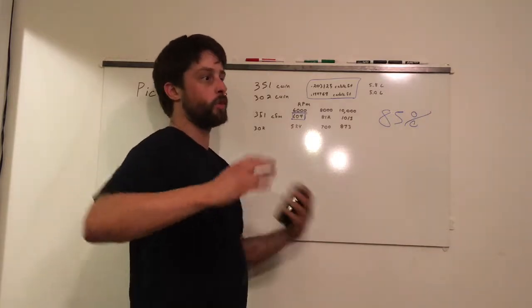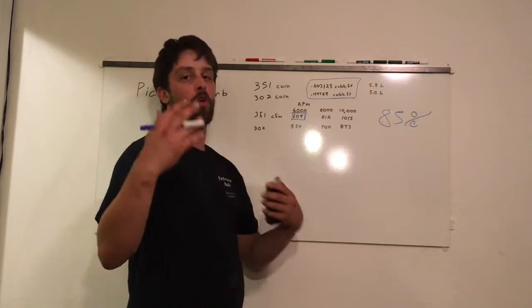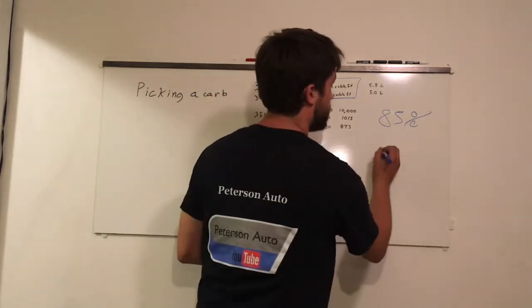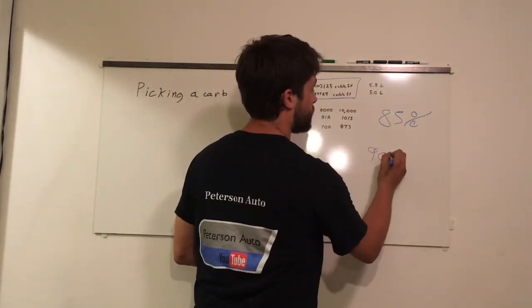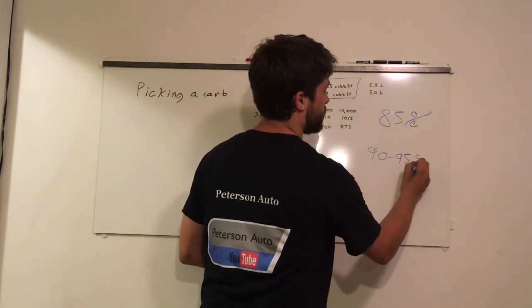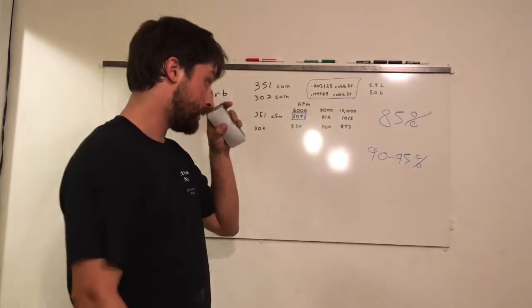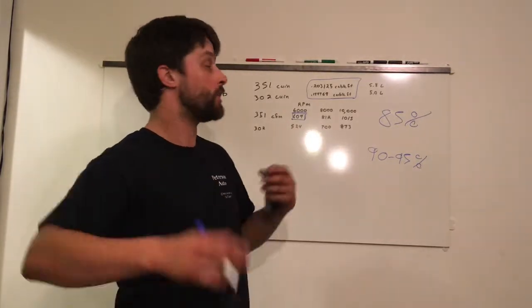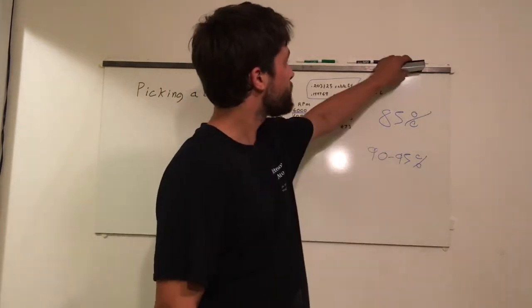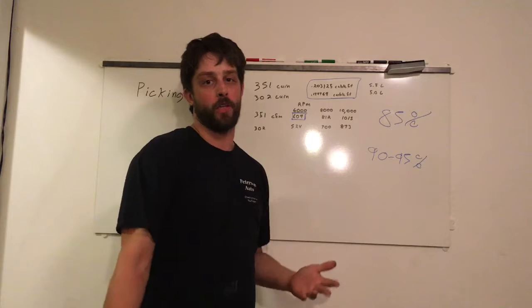For your street strip classic car we're going to go with 95%, 90 to 95%. So 85%, 95% volumetric efficiency, what they're meaning, what they're telling you is that your engine's not perfectly efficient.